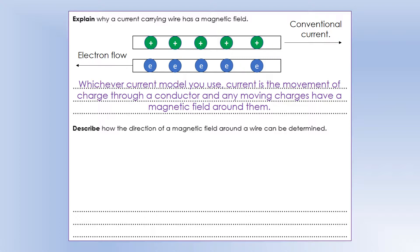Moving charges exert a magnetic force on other moving charges, so we say those moving charges have a magnetic field around them. A current is just a way of making charges move. So if we have a current-carrying wire, we get a different type of field than we've seen before - we get a circular field around the wire.